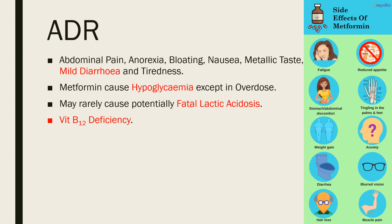Adverse effects of metformin are frequent but generally not serious. Abdominal pain, anorexia, bloating, nausea, metallic taste, mild diarrhea, and tiredness are the usual complaints, which tend to subside with time. Metformin, unlike the sulfonylureas, does not cause hypoglycemia except in cases of overdose. It may rarely cause potentially fatal lactic acidosis; small increases in blood lactate can occur with metformin.